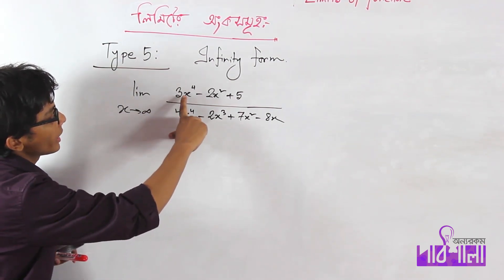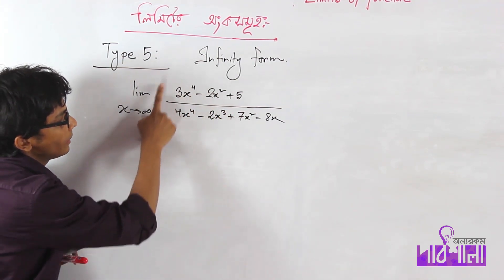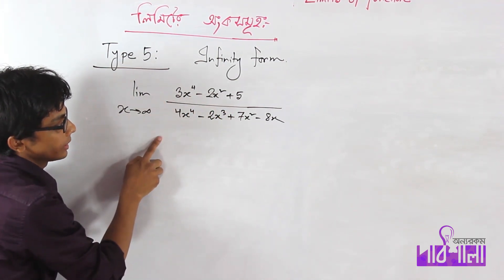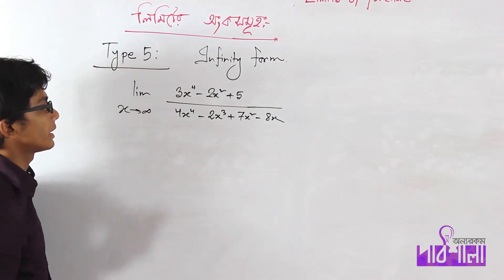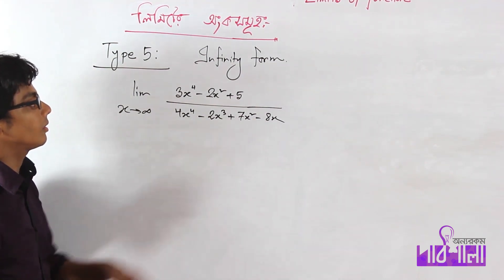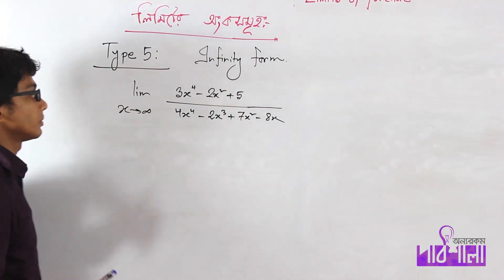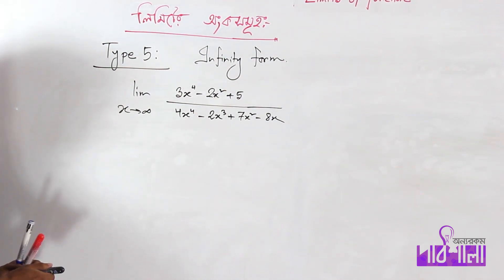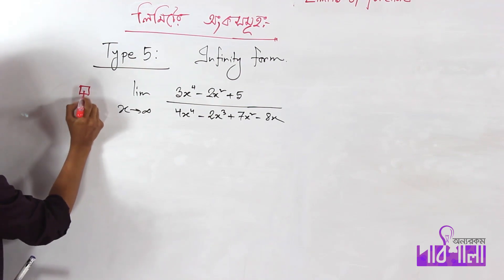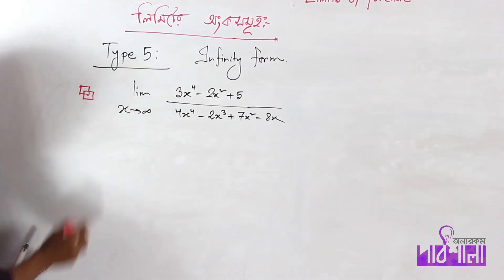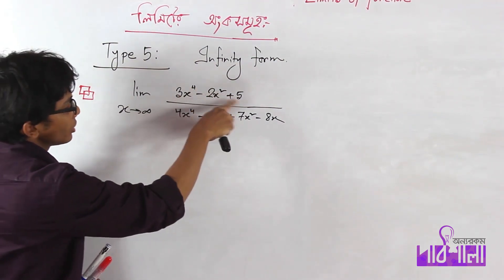Here we are dealing with infinity over infinity, which is an indeterminate form. When you have infinity by infinity, it is unknown — we need a technique to resolve this.